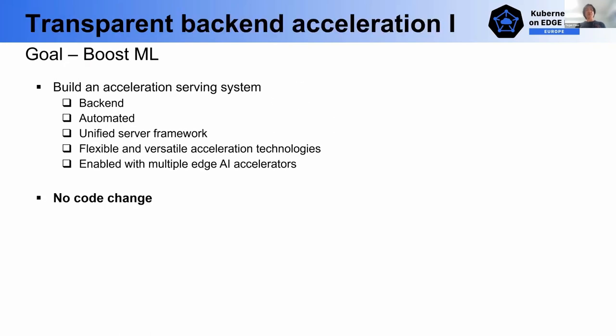Let's first talk about our transparent backend acceleration. Now here our goal is to build an acceleration server system. The system is backend and automated, so this can work automatically. The system also has a unified server framework, so you can easily integrate that to any platform. We also enabled a lot of acceleration technology on many edge AI accelerators. Here, one thing worth mentioning is there is no any code change to your application written with those upstream machine learning frameworks. How can we make this happen? Let's move on.